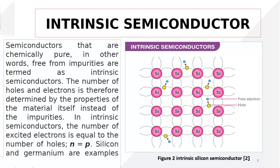If one electron is excited from the valence band, there is also the possibility that more electrons can be excited from the valence band to the conduction band. As many electrons are ejected from the valence band to the conduction band, a similar number of holes will be present in the valence band. That means the number of holes and the number of electrons in the intrinsic semiconductor are the same.